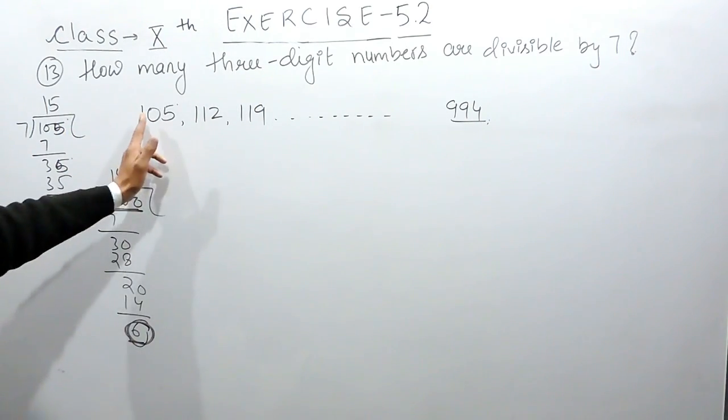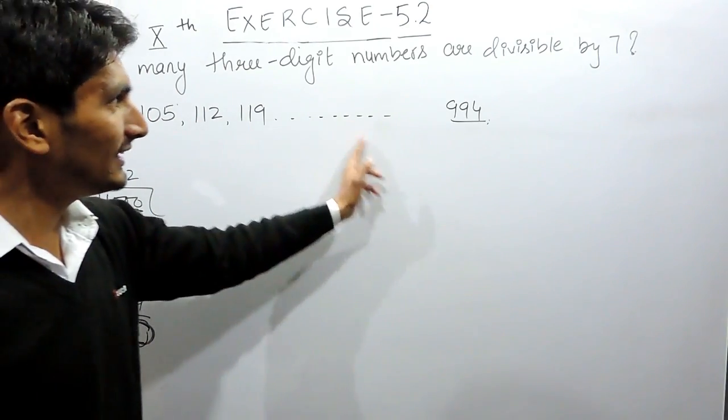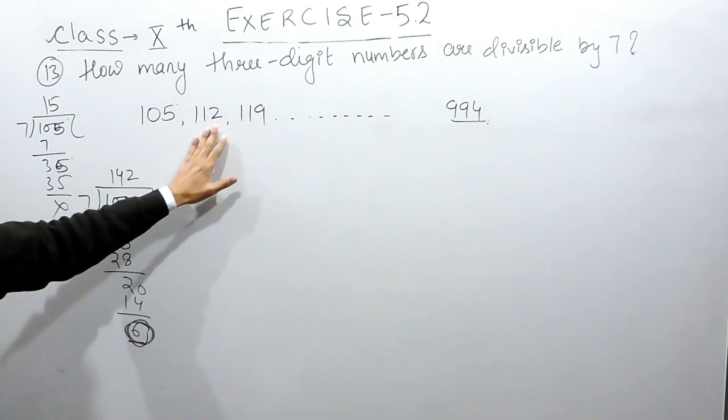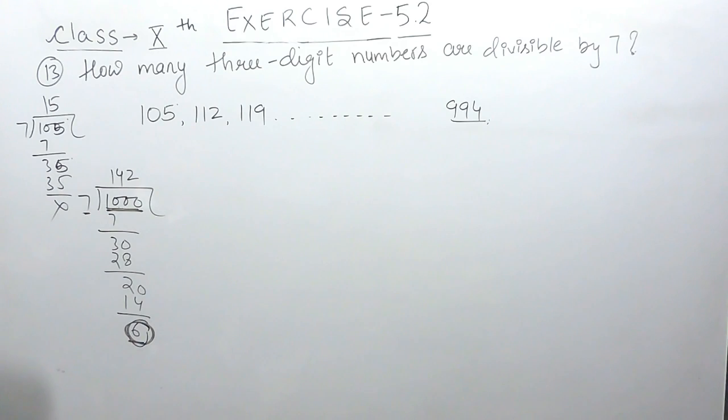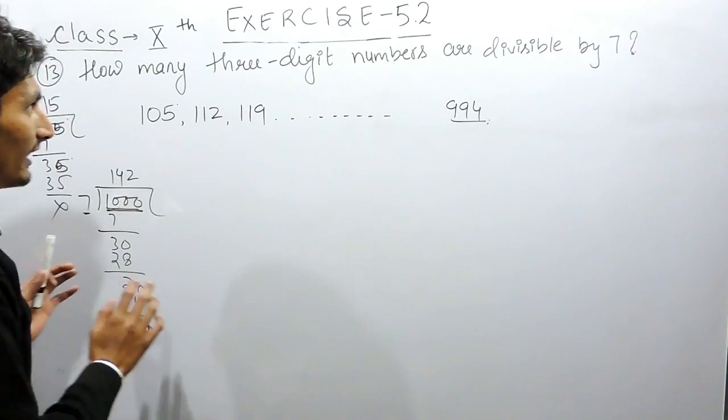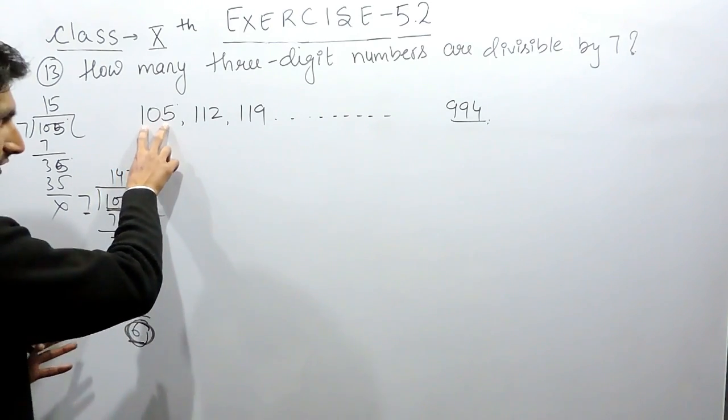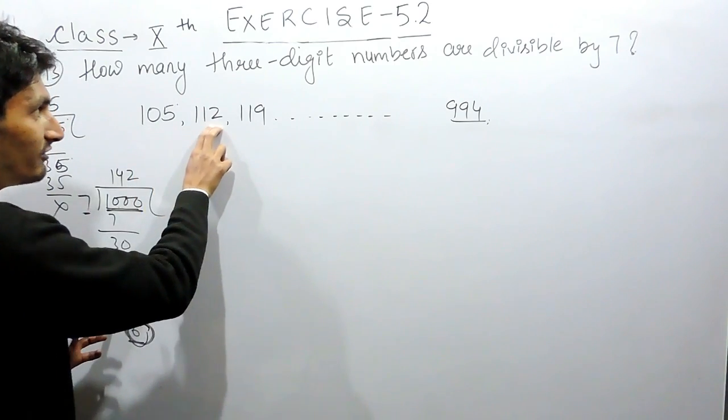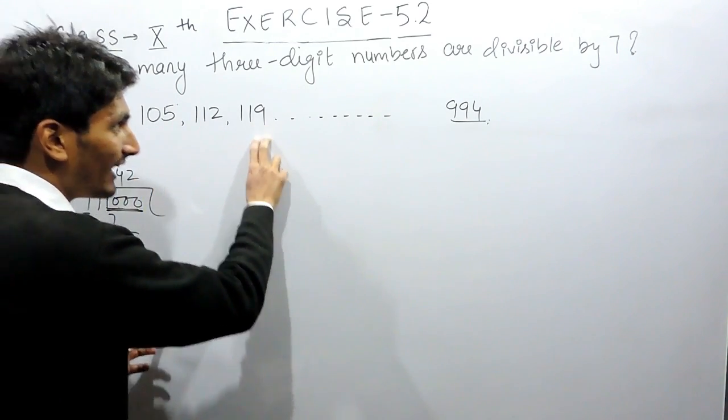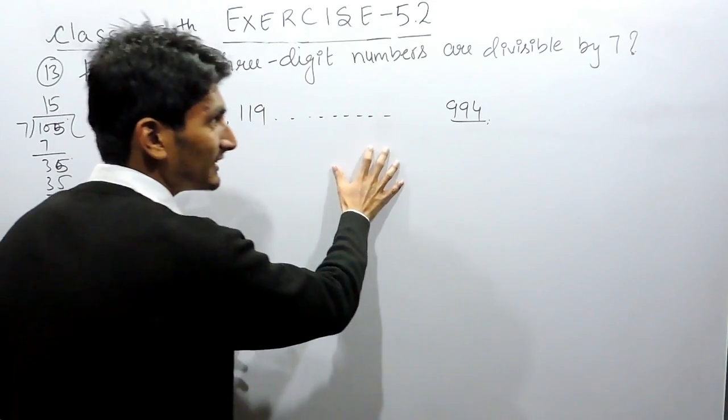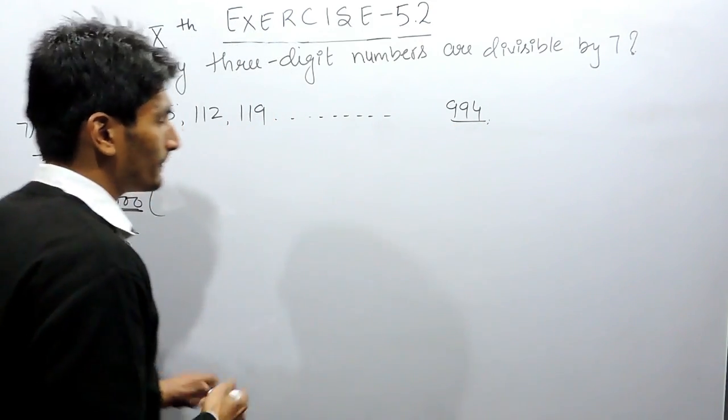The first method is you can count these numbers till 994 and you will get how many numbers are divisible by 7. Or, in other words, if we look at this series closely, we find that this is a classic example of arithmetic progression where this is the first term. To make the second term, you are adding a constant, plus 7, and again plus 7. You have to find how many terms are there in this AP if its last term is 994.